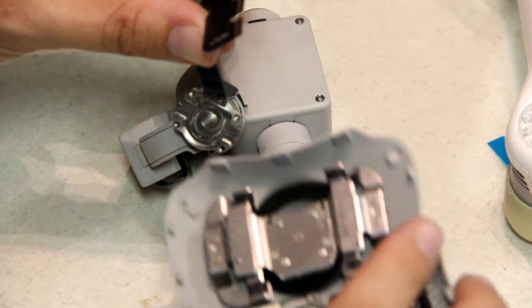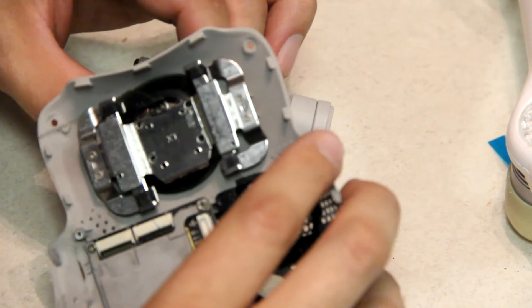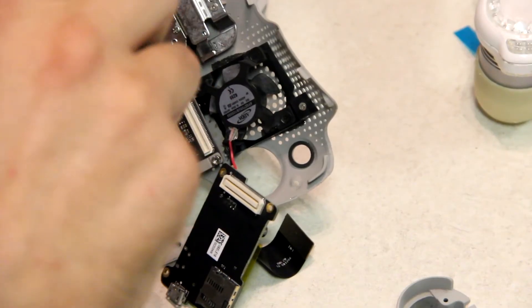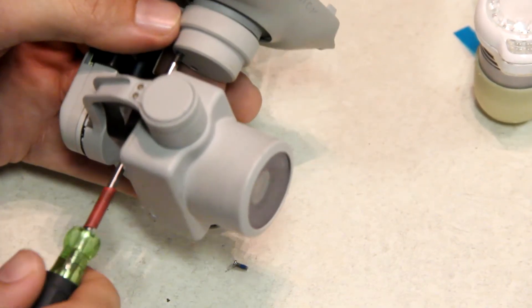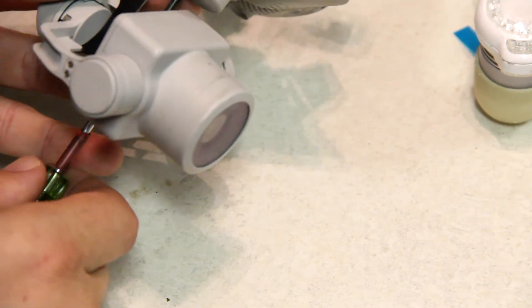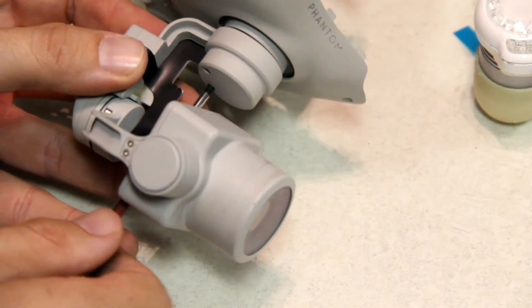And you want to gently press down so that the adhesive grabs the spot. Next, you want to take this, slide it back in place, and you want to line up those screw holes. That screw in goes back into place. The second one.